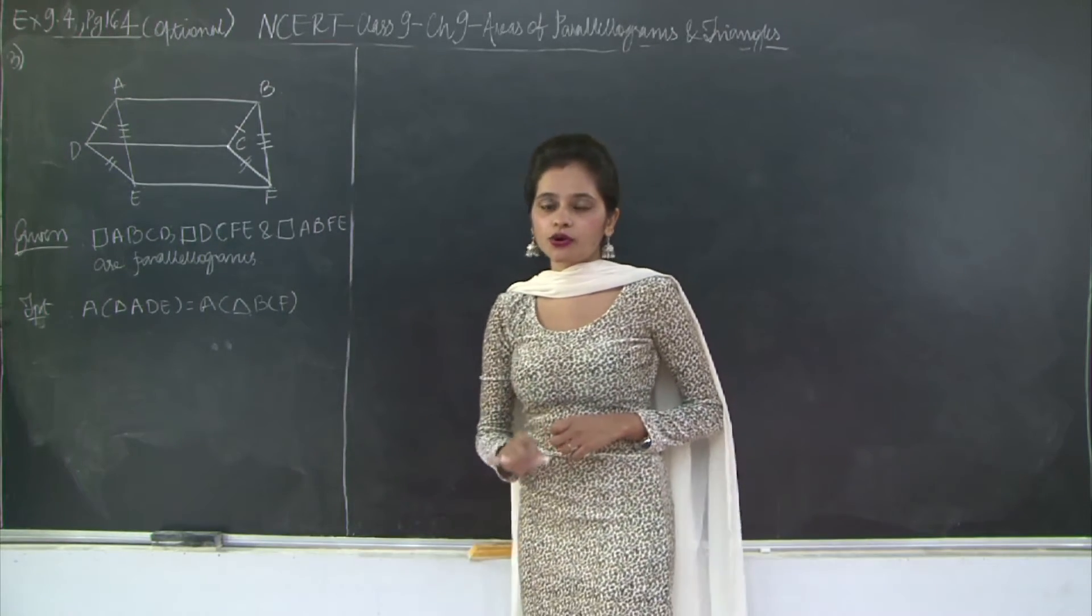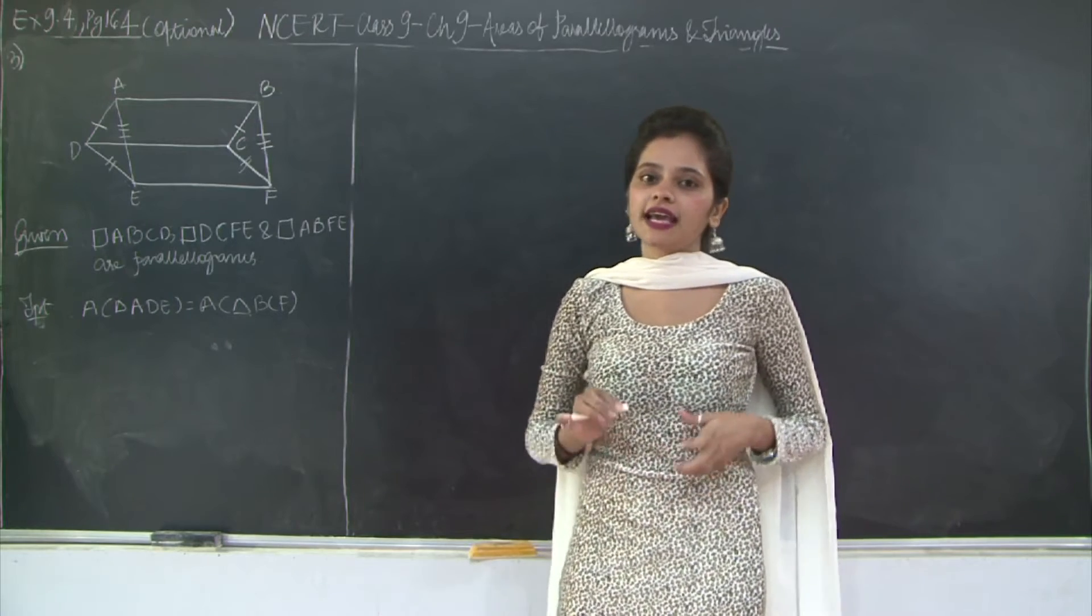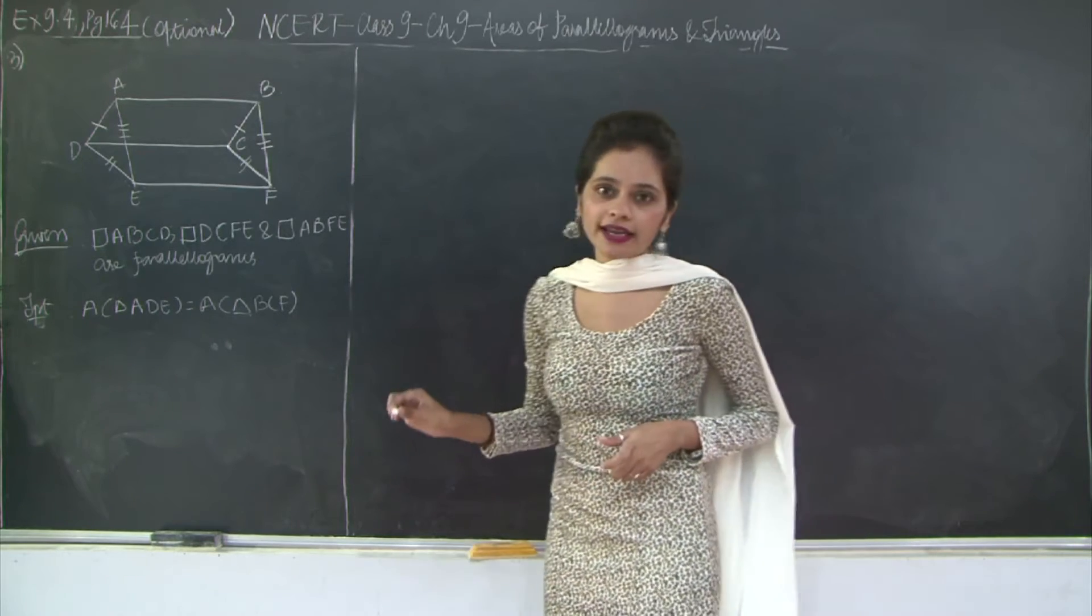Therefore, I can prove that the two triangles are congruent to each other by the SSS test of congruence. Also, we know that for two congruent figures, the areas are equal. So let's go ahead and write the proof.